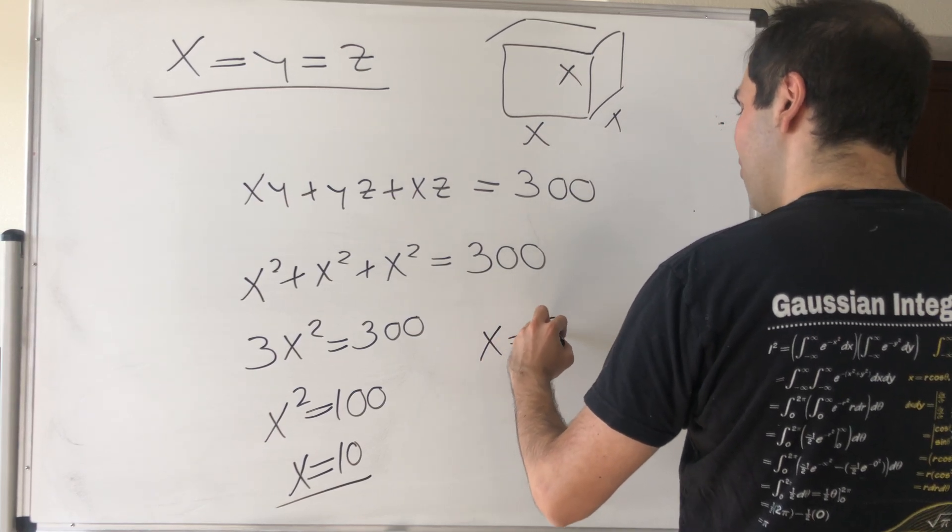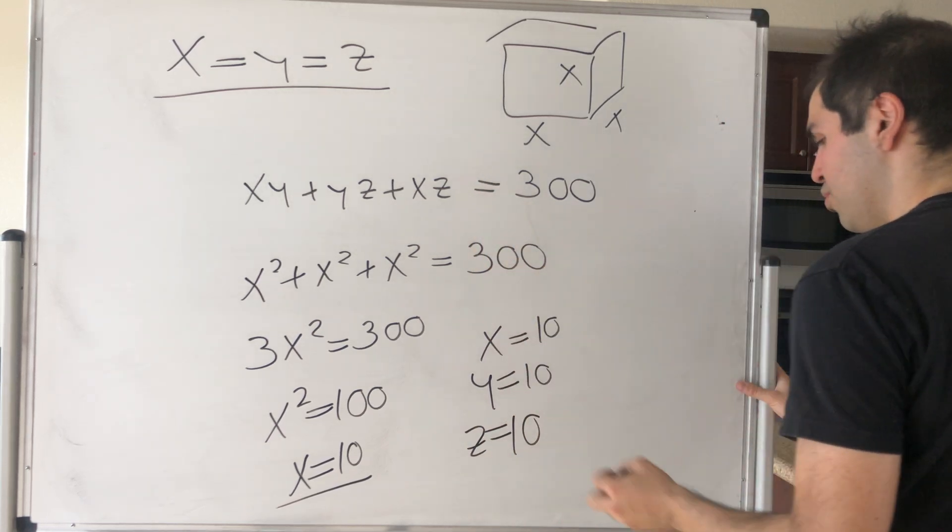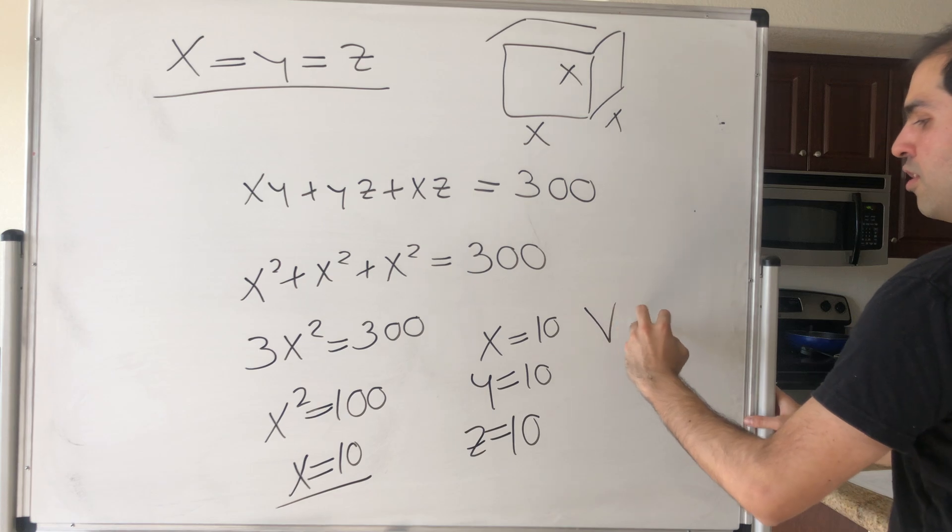So what we get is x is 10, y is 10, z is 10. And what is the largest volume? Well, the largest volume is xyz, which just becomes 1000 cubic centimeters.